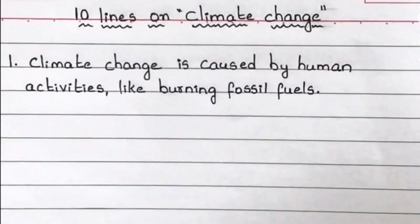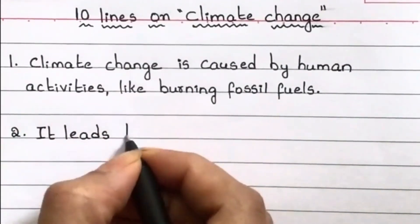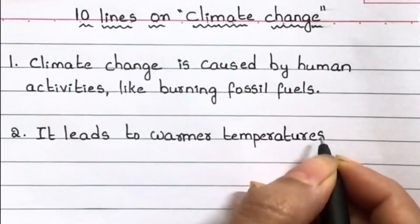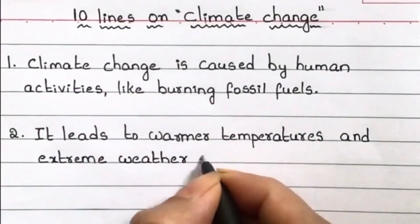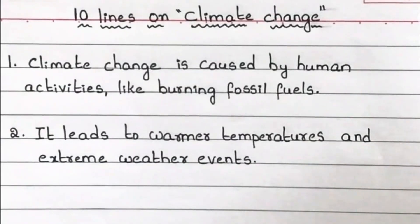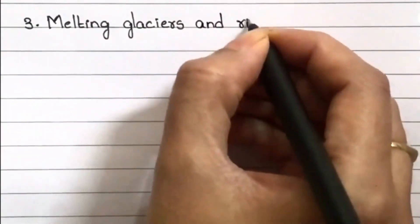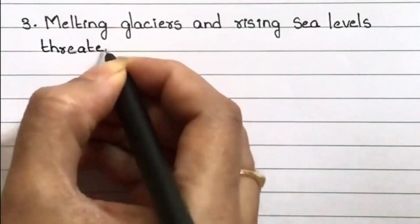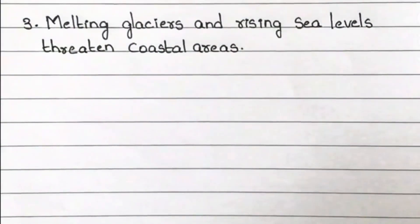Climate change is caused by human activities like burning fossil fuels. It leads to warmer temperatures and extreme weather events. Melting glaciers and rising sea levels threaten coastal areas.